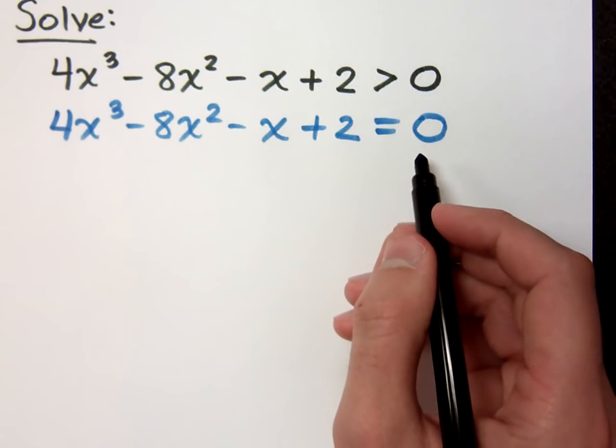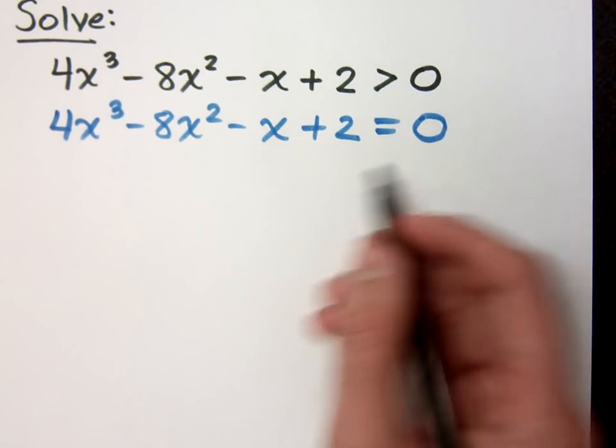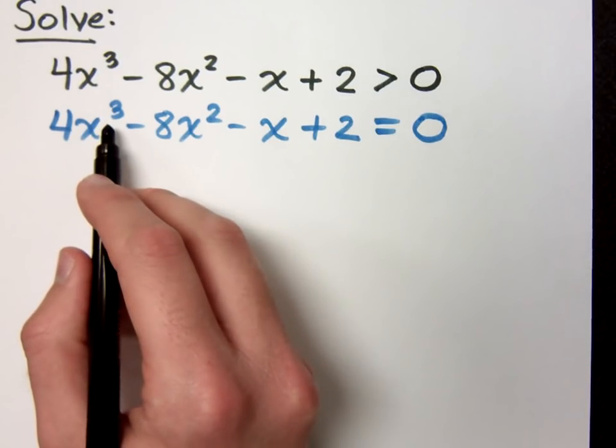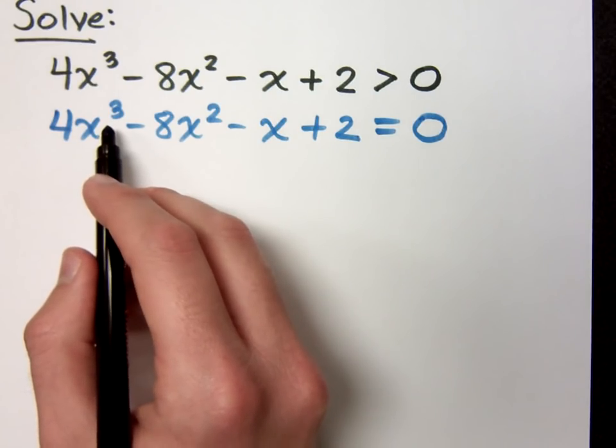And these other problems that we've had, they've been quadratic, which means they have two solutions when I have them set equal to zero, and I've got two gatekeepers. In this case, I've got something that's to the third power, so I have the potential to have three gatekeepers, three critical values, which would then separate my number line into four intervals.